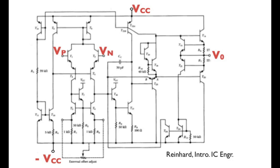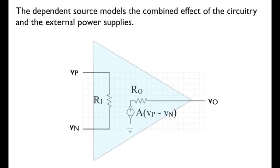We do see the nodes where the DC voltage sources are connected. We see the nodes where the input voltages are brought to the op-amp. And we see the nodes where the output voltage is. So as users of the op-amp, as circuit designers who are going to incorporate the op-amp into our systems, we generally don't need to know the transistor-level details of the chip. The dependent source does an excellent job of modeling the combined effects of the circuitry and of the external power supplies. And that's a good thing.